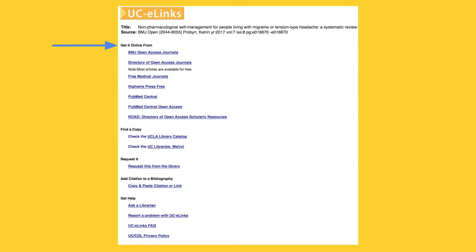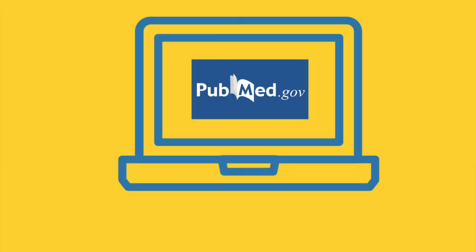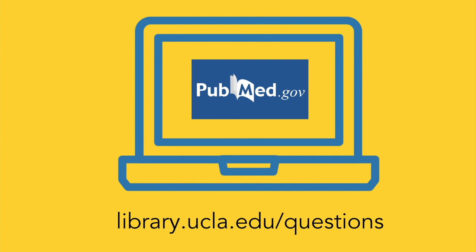If it turns out that UCLA Library doesn't currently have access to the article you need, just fill out an interlibrary loan request by clicking Request This from the Library, and a librarian will work to get you a copy from one of our library partners. If you still have questions, get immediate help 24/7 via chat by clicking on Ask a Librarian. We hope this introduction will help you get the most out of your PubMed research, and if you're looking for more support from the UCLA Library, we're here to help. Just visit library.ucla.edu/questions.